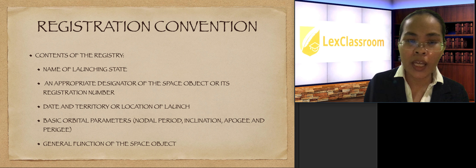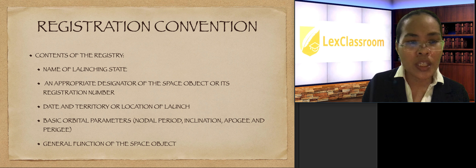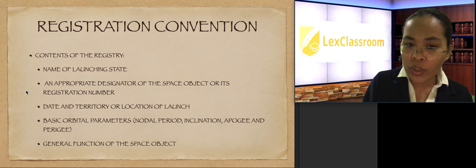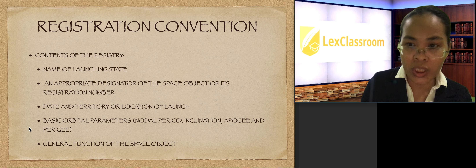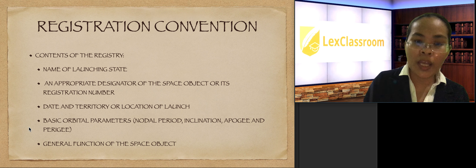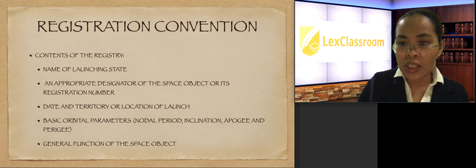The Registration Convention requires that space objects be registered. The registry must contain: the name of the launching state, to trace liability; an appropriate designator or registration number of the space object; the date and territory or location of launch; and basic orbital parameters — the nodal period, inclination, apogee, and perigee, meaning the closest and farthest distances during orbit from Earth — as well as the general function of the space object, such as research or satellite use.